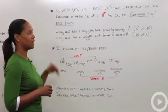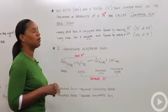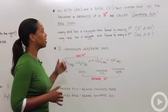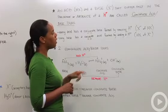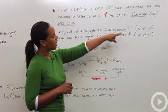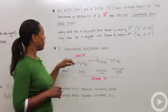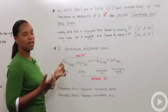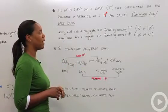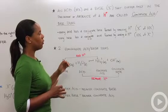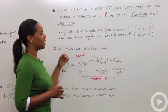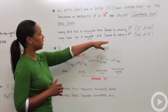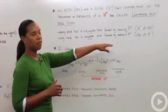Every acid has a conjugate base that's formed by removal of the proton. So again, in the previous example, X minus is the conjugate base of the acid HX. And similarly, every base has a conjugate acid that's formed by adding a proton. So HX would be the conjugate acid of the base X minus.